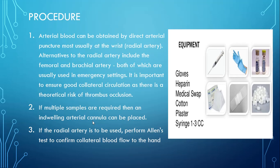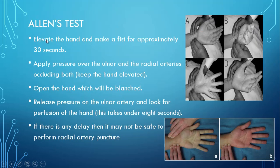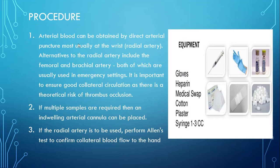If you need more samples, you can put in an IV cannula and take blood samples at frequent intervals. If the radial artery is to be used, we perform an Allen's test to confirm collateral blood flow to the hand. This test is used to confirm the collateral circulation of the hand.